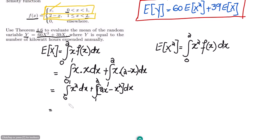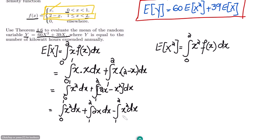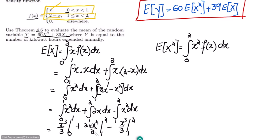Simplifying, E[x] becomes the integral from 0 to 1 of x² dx, plus the integral from 1 to 2 of 2x dx, minus the integral from 1 to 2 of x² dx. Evaluating these, we get x³/3 from 0 to 1, plus 2·(x²/2) from 1 to 2, minus x³/3 from 1 to 2. The two x³/3 terms partially cancel.